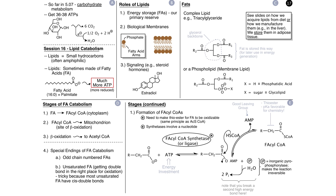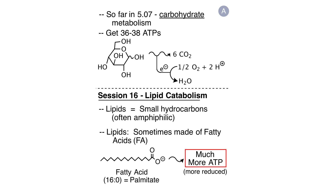Let's look at Storyboard 17, Panel A. So far in 507, we've looked in detail at carbohydrate catabolism. We've seen that the complete catabolism of a molecule of glucose by way of glycolysis, pyruvate dehydrogenase, and the TCA cycle results in the generation of about 36 to 38 molecules of ATP.